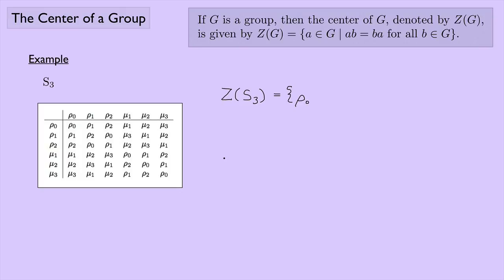But do we have anything else? Let's look at rho one. How about rho one and mu one? If we look at rho one times mu one, we get mu three. And what about mu one times rho one? That gives mu two. So rho one and mu one don't commute — rho one is no good.